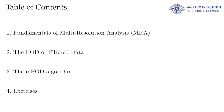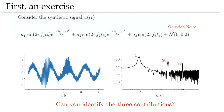So what is MRA? I will first motivate it with an example. Consider a signal which has multiple scales. We sum together three sinusoids and add some random noise with a Gaussian PDF with zero mean and some standard deviation. One sinusoid has a frequency of 1 Hertz and an amplitude of 1 and exists in the entire domain. The other two have higher frequencies, 90 Hertz and 20 Hertz, and are modulated by two Gaussians centered at different time intervals — the first at one second and the second at 2.2 seconds.